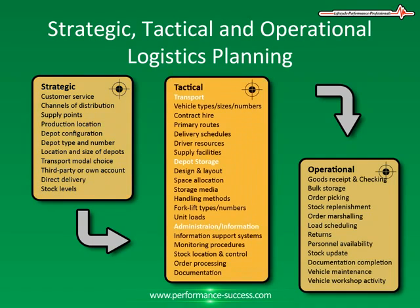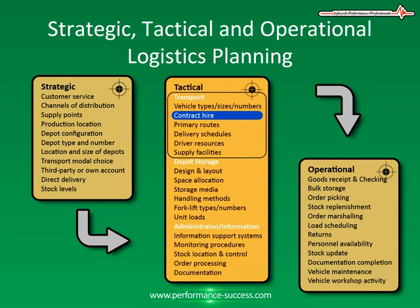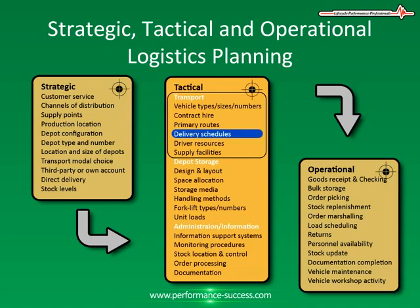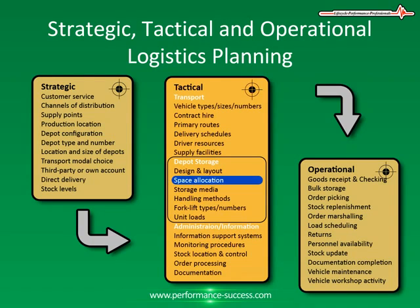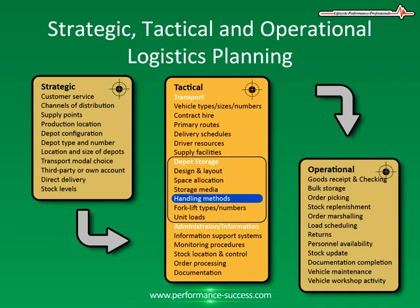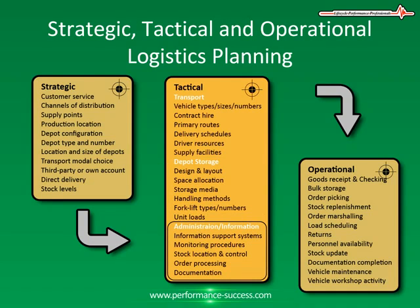In the tactical function, you have transport: vehicle type, sizes and numbers, contract hire, primary routes, delivery schedules, driver resources, and supply facilities. You also have depot storage: design and layout, space allocation, storage media, handling and methods, numbers, and unit loads.